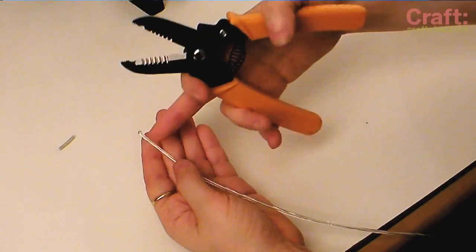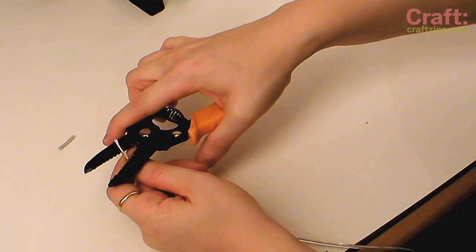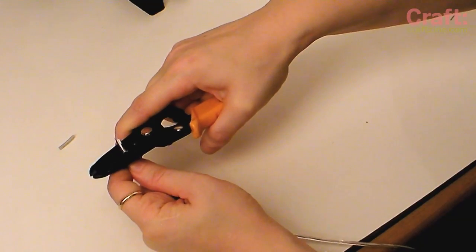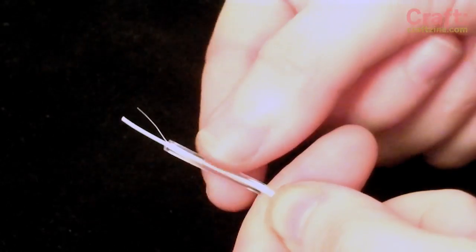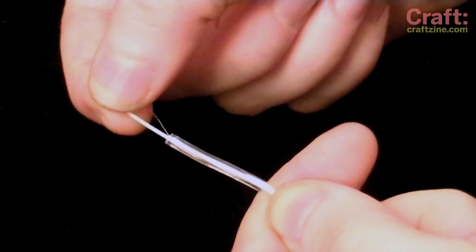The first step is to take off the protective PVC sheath on the wire using the wire strippers. Strip off the plastic about one centimeter from the end.